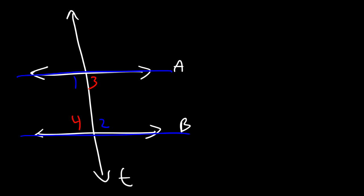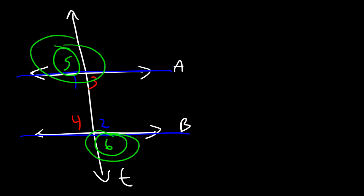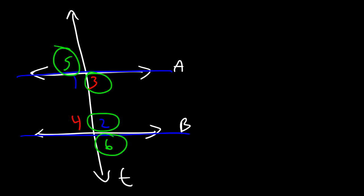Angles 3 and 4 are also alternate interior angles. Angles 5 and 6 are alternate exterior angles — they're alternate because 5 is on the left side of the transversal and 6 is on the right side, and they exist in the exterior of the two parallel lines, outside of them. Angles 3 and 2 are consecutive interior angles and they add up to 180 degrees.